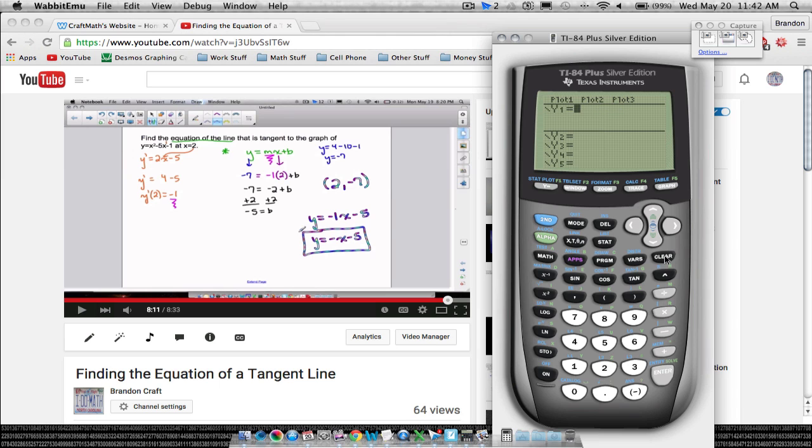You can do this for any curve. For example, if we took x to the third plus 4, let's view the graph. So we got a cubic function and let's find the derivative - let's find the equation of the tangent line at say x equals negative 1.